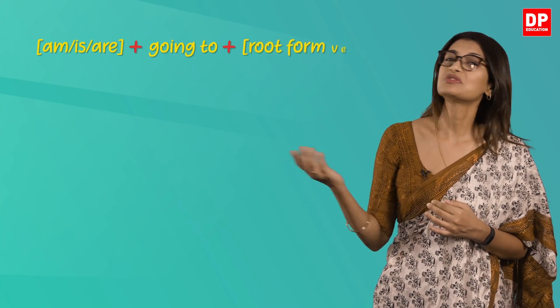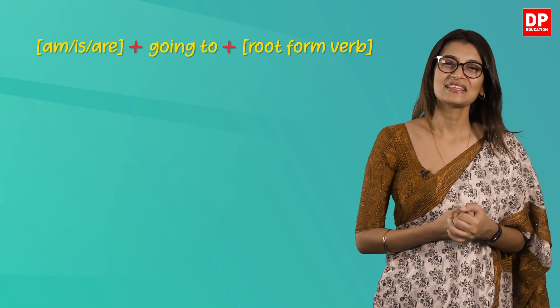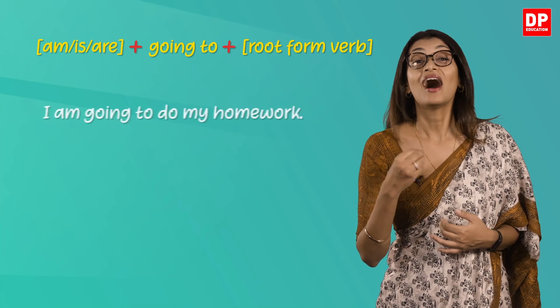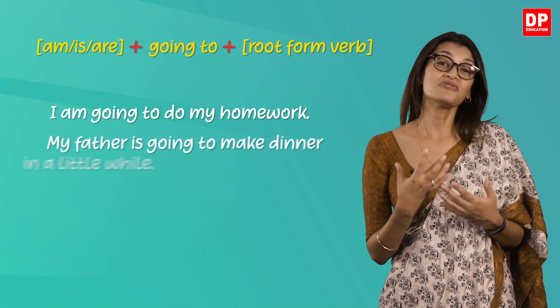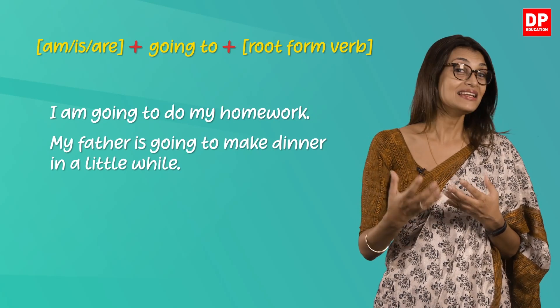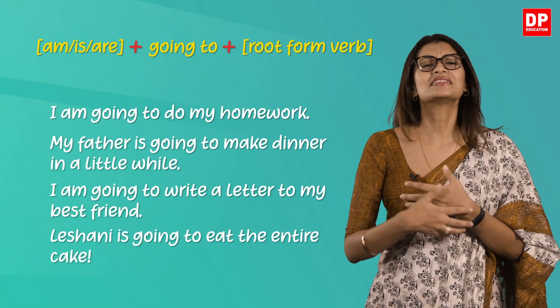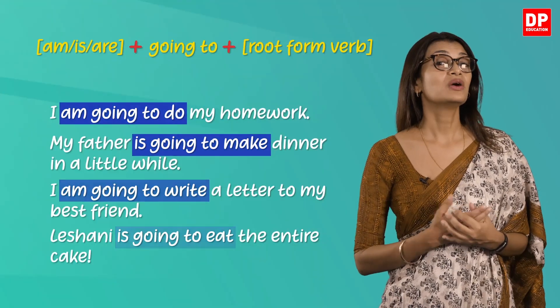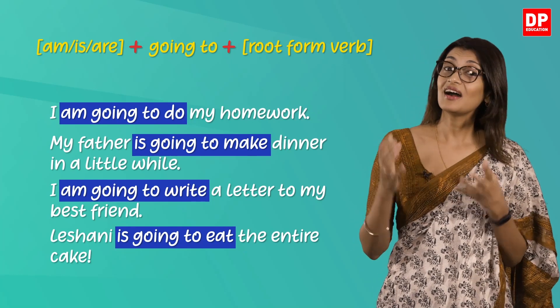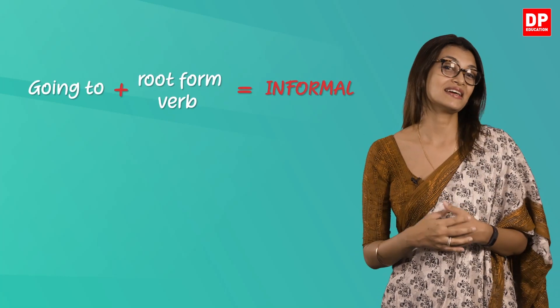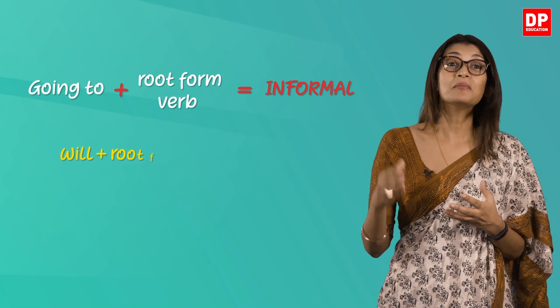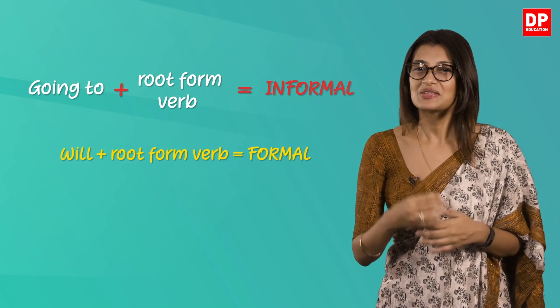The second way follows the formula 'am/is/are' plus 'going to' plus the root form of the verb. For example: 'I am going to do my homework.' 'My father is going to make dinner in a little while.' 'I am going to write a letter to my best friend.' 'Leshani is going to eat the entire cake.' The 'going to' construction is common in speech and casual writing, but it's on the informal side, so it's a good idea to stick to the 'will' plus root form in formal writing.